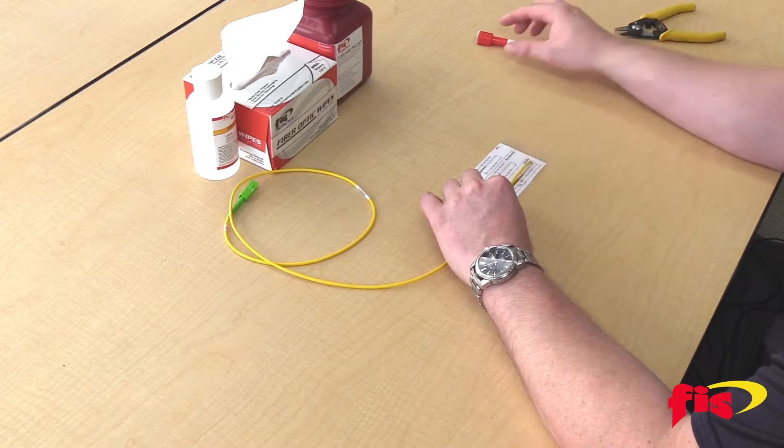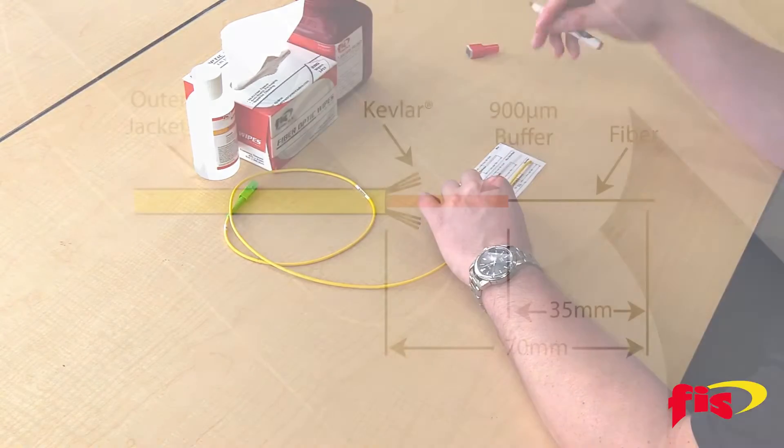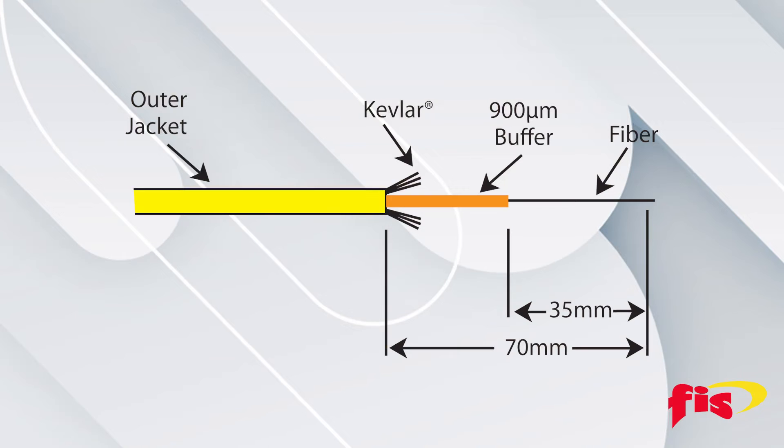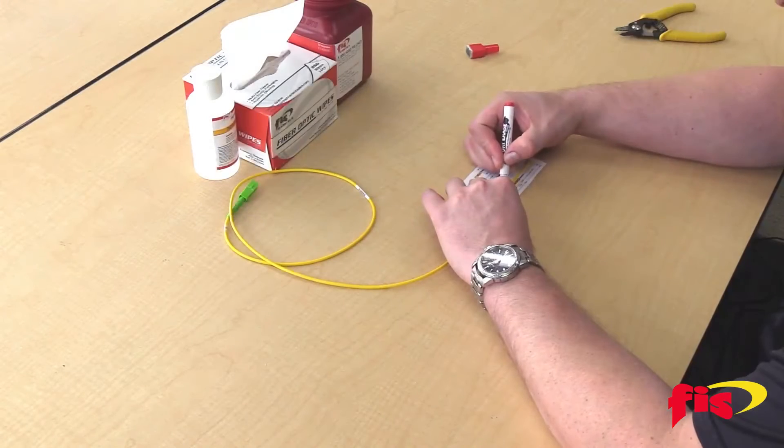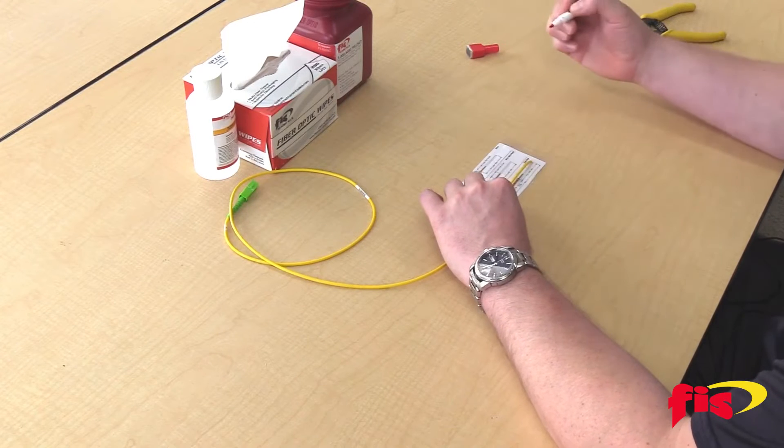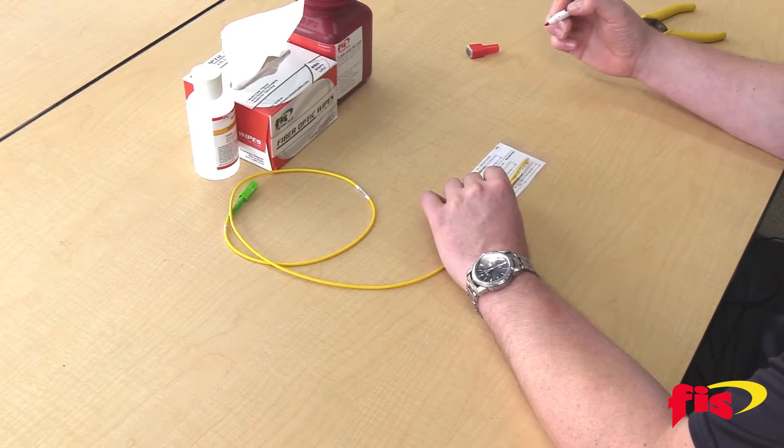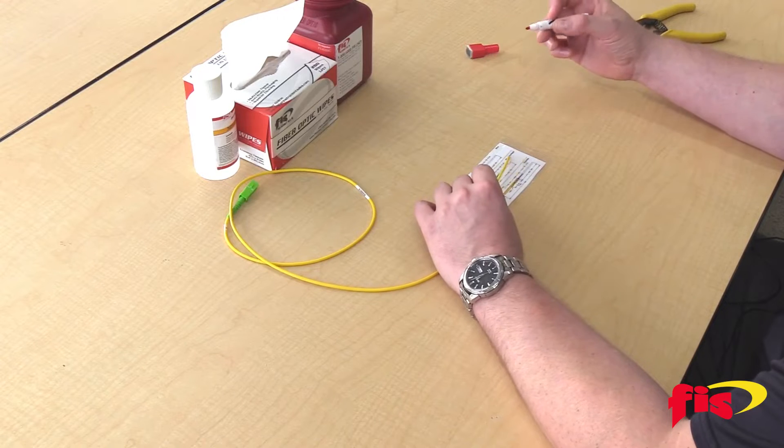The first strip I'm going to make is to strip off 70 millimeters of the outer three millimeter jacket. To do so, I'm just going to put a little mark here with my marker where the yellow section meets the orange. That's the 70 millimeter strip mark.